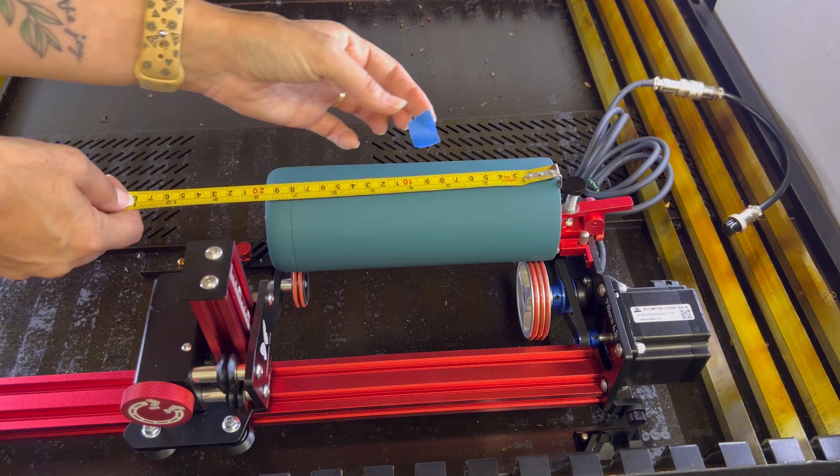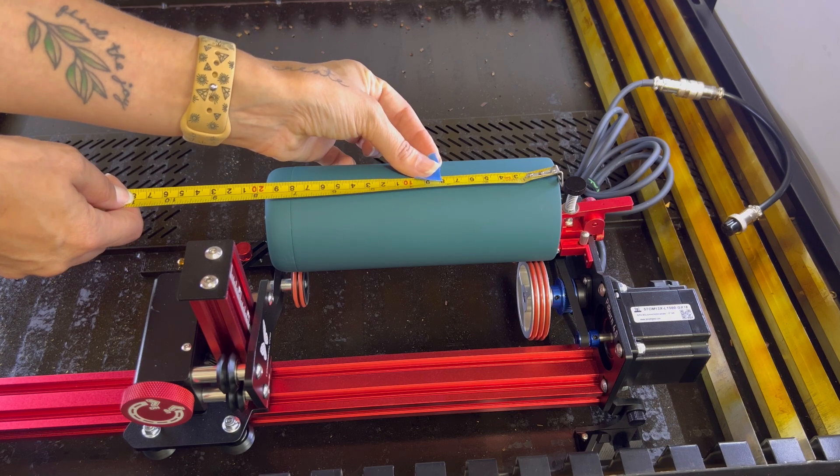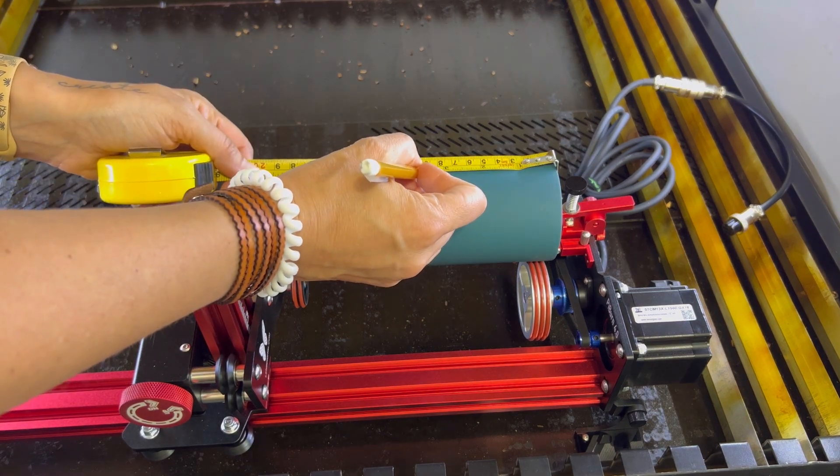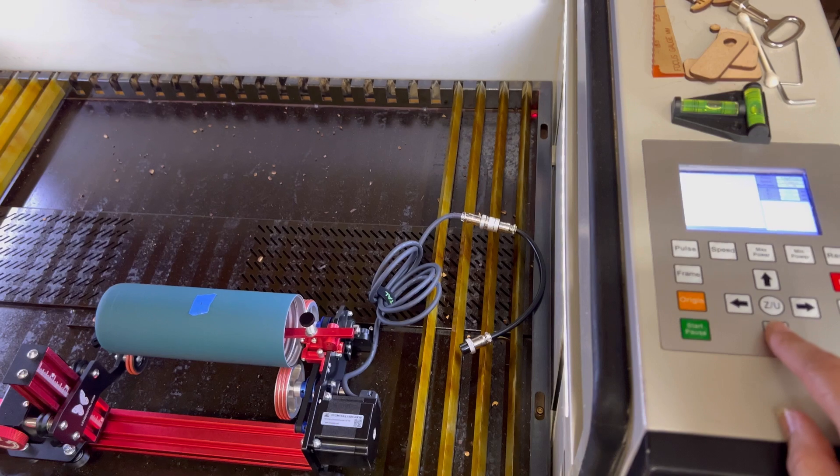Next we're going to measure the center of the tumbler. Make sure you center it in the engraveable area. I like to put a piece of tape here so I can easily remove it. Mark the center and that is where our red dot is going to be.